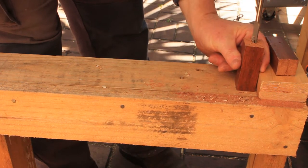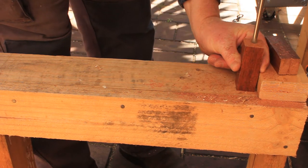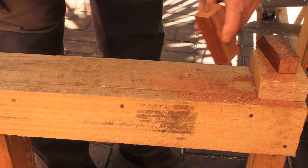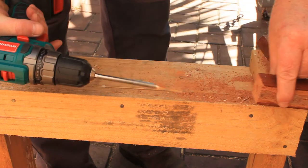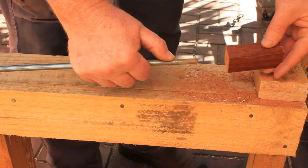Use a ten millimeter spade bit to enlarge the holes in the handles. Check that your threaded rod fits and that the hole is lined up well enough in the handle.